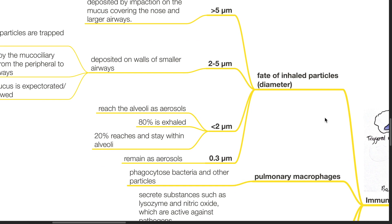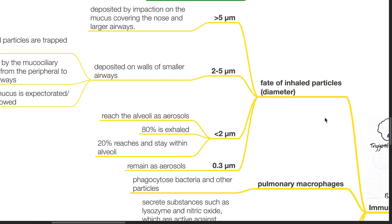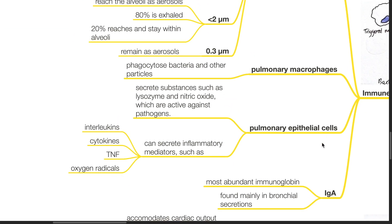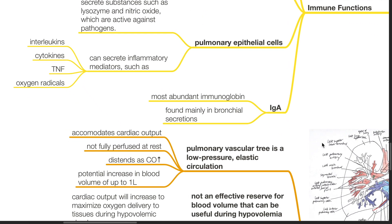Particles less than 2 micrometers reach the alveoli as aerosols; 80% is exhaled and 20% reaches and stays within the alveoli. For particles less than 0.3 micrometers, these remain as aerosols and are exhaled. Pulmonary macrophages phagocytose bacteria and other particles. Pulmonary epithelial cells secrete substances such as lysozyme and nitric oxide which are active against pathogens. They can secrete inflammatory mediators such as interleukins, cytokines, TNF and oxygen radicals. IgA is the most abundant immunoglobulin and is found mainly in bronchial secretions.